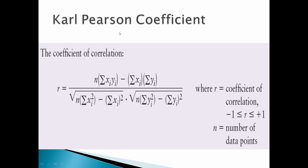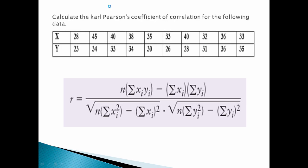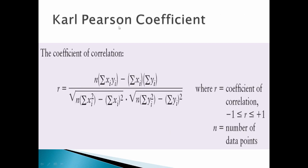There are two formulas in Pearson's coefficient. We will show you the simple formula. The formula is R equals to the formula, where n is the number of points. The summation of xi into yi — we will show you the summation of xi into yi, where xi yi means multiply all entries and take the whole summation.